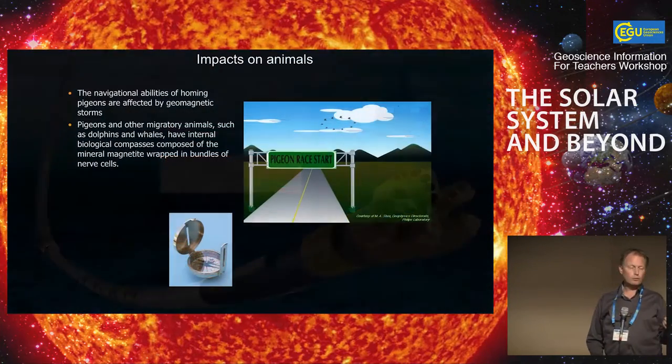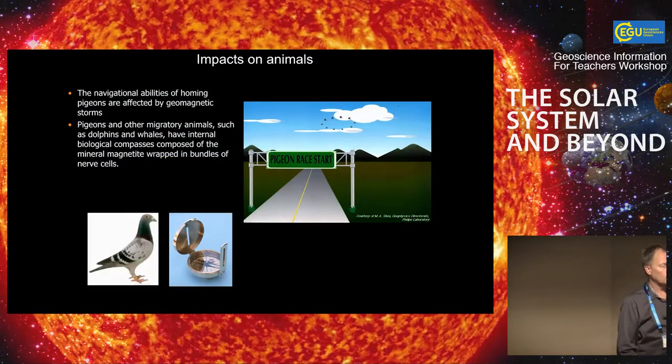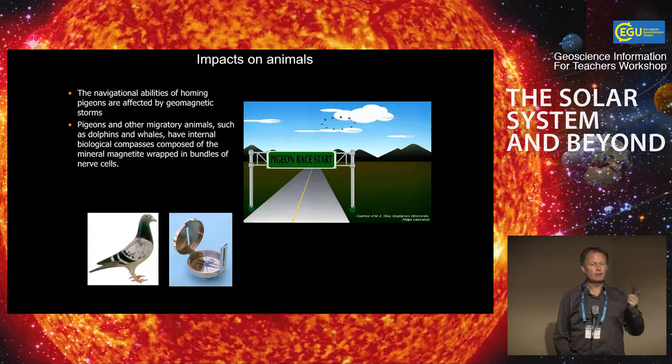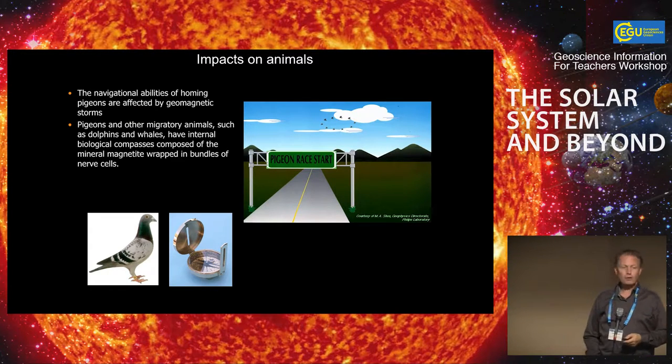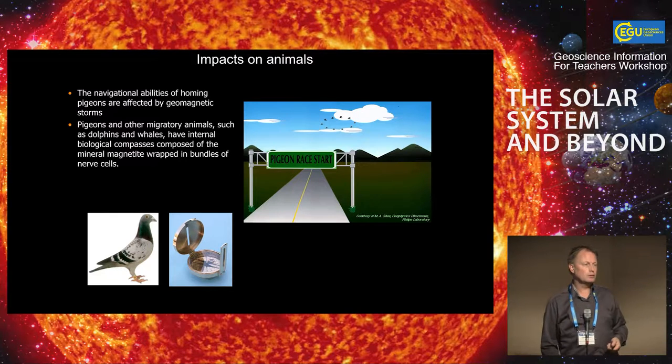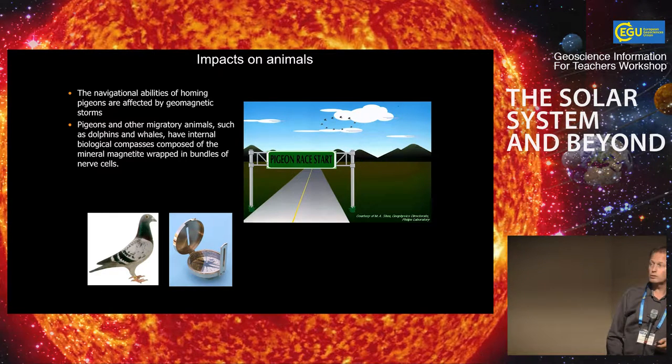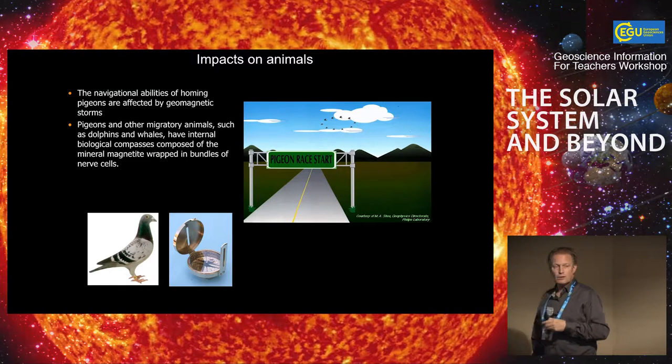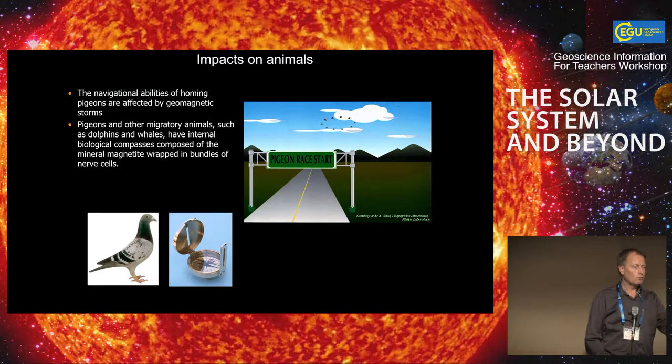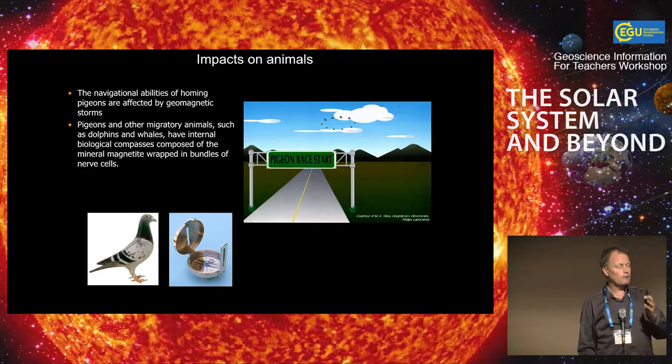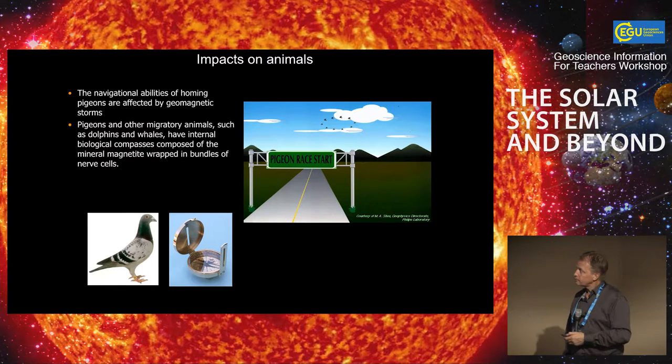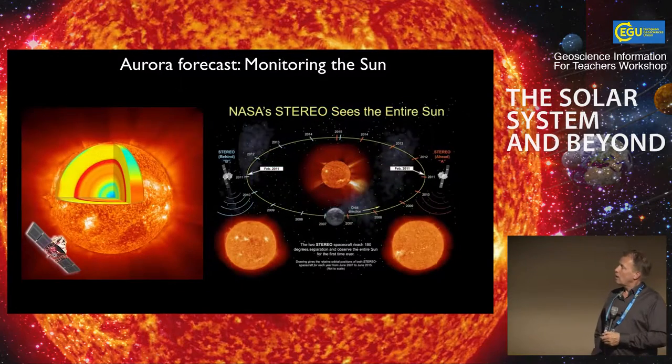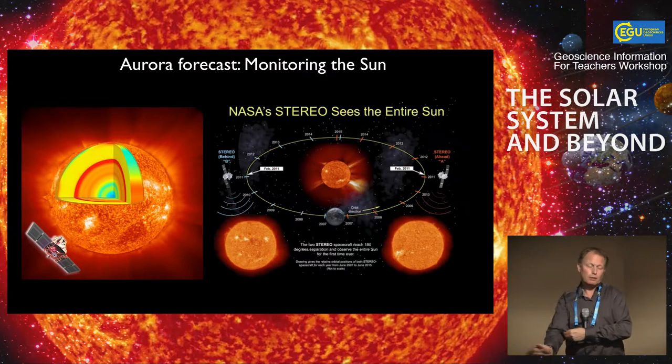Some animals are also affected. Pigeons are using the Earth's magnetic field as one of the ways of navigating. It's well known that they get confused when there's very strong geomagnetic storms. You will actually see a compass needle fluctuating up to 10 degrees back and forth. Of course, that's so slow you won't see it, but if you have a time lapse on the compass, you can see it very clearly.